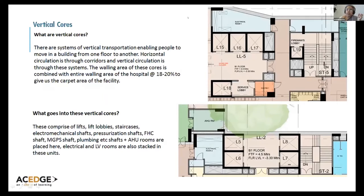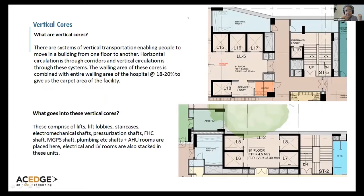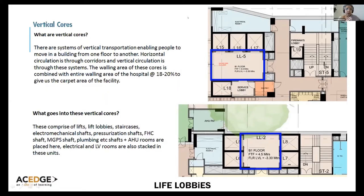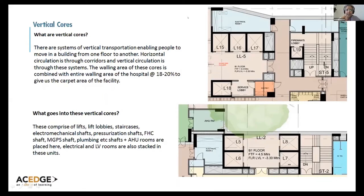What goes into these vertical cores? There are lifts, staircases, and lift lobbies. In India, we often try to put lifts along corridors, thinking people will come out and go to their spaces, but that's not a good practice. Lift lobbies must be enclosed — enclosed because of fire laws, otherwise you can leave them open for aesthetic reasons. A lift lobby has to be pressurized because it's a fire core.